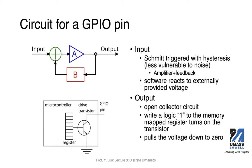For the output direction, an open-collector circuit is typically used — a transistor connected to a bit in the register. That bit controls switching the transistor on and off, connecting the GPIO pin to ground or isolating it from ground. If you write a logic one to the memory-mapped register, it will turn on the transistor and pull that GPIO pin's voltage down to zero. This might seem counterintuitive, but think of it as an active-low device — that's why writing logic one gives an output of zero.